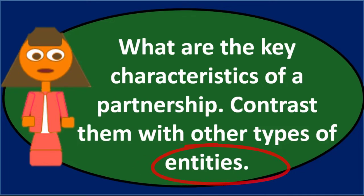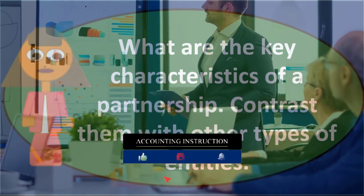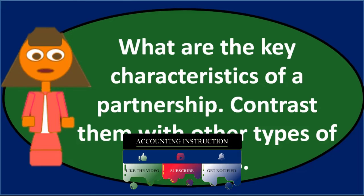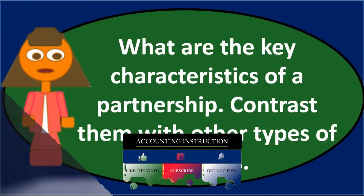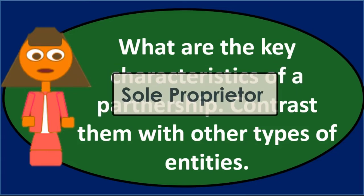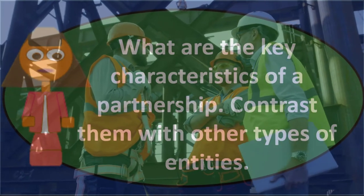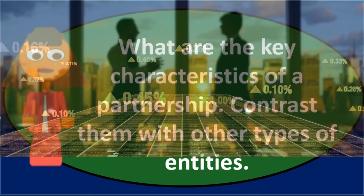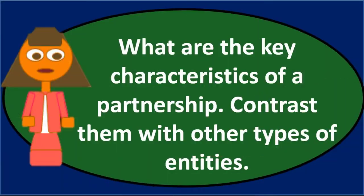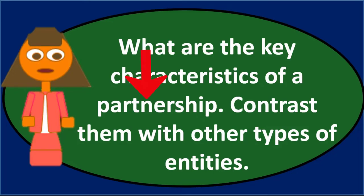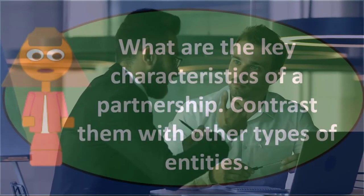The most common comparable entity is the sole proprietor, which shares many characteristics with a partnership, including unlimited liability and ease of formation, but involves only one individual. A key decision point is whether to remain a sole proprietor or take on a partner. Taking on a partner makes it easier to get capital investment, but introduces mutual agency, shared decision-making, and binding authority for all partners.